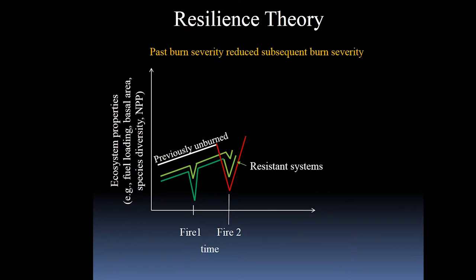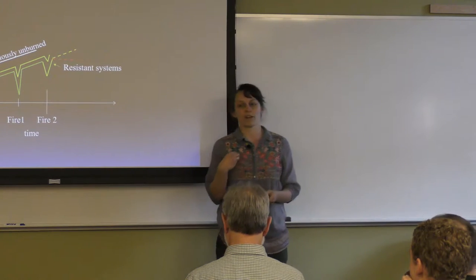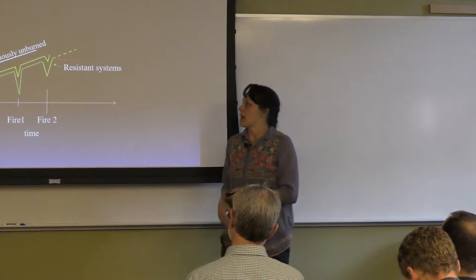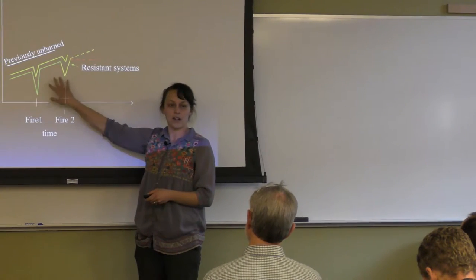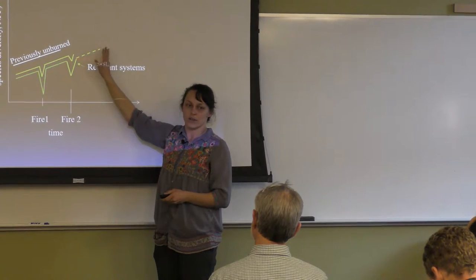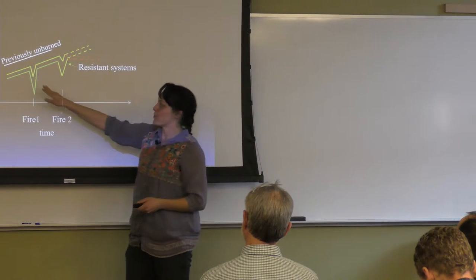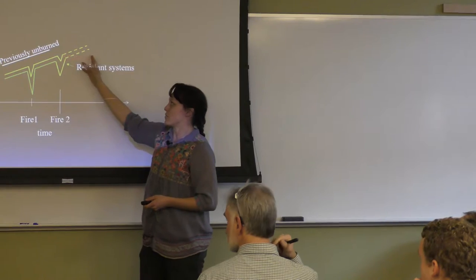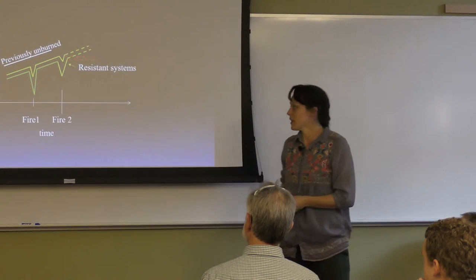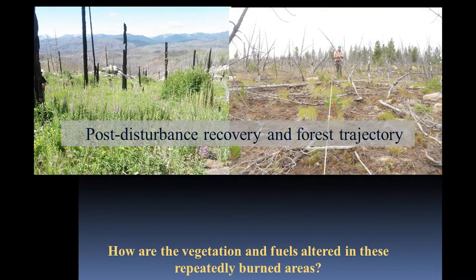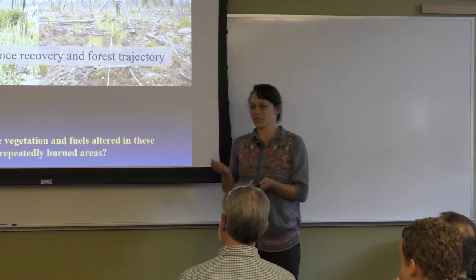So those areas burned at lower severity — and studies have also shown they can be relatively good barriers to subsequent fires. But what does that mean in terms of ecosystem resilience? Are areas burning at high-severity combinations maintaining their resilience and continuing on a similar trajectory, or are they transitioning? For this, our big question was: how are vegetation and fuels altered by repeated fires? I want to point out that here we're not talking about a binary thing, but actual species density and tree seedling density as well as fuels.